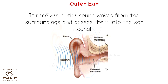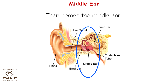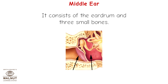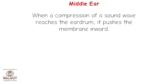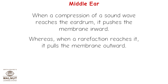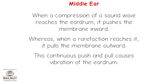Then comes the middle ear. It consists of the eardrum and three small bones. The eardrum is a thin membrane present at the end of the ear canal. When a compression of a sound wave reaches the eardrum, it pushes the membrane inward, whereas when a rarefaction reaches it, it pulls the membrane outward.